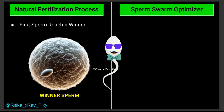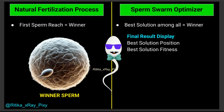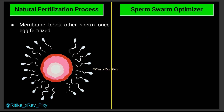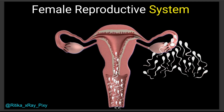In natural fertilization, the first sperm to reach the egg is the winner. In this optimizer, sperms perform exploration and exploitation in the solution space collectively, and the algorithm identifies the best solution among all as the winner. Just as the membrane blocks other sperm once the egg is fertilized, the algorithm stops when the best solution is found or the maximum number of iterations is reached.